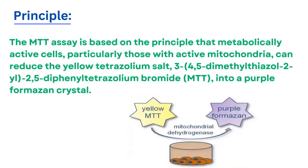Formazan is the chromogenic product of the reaction. This conversion occurs only when the mitochondrial dehydrogenase enzyme is active. If the cell has died or its mitochondria are inactive, the yellow MTT will not convert to purple formazan — it will remain yellow.